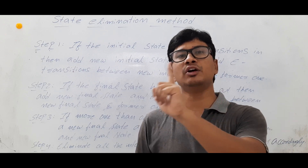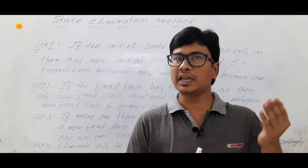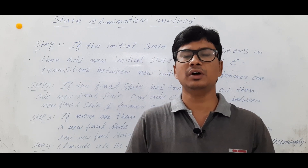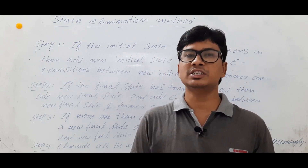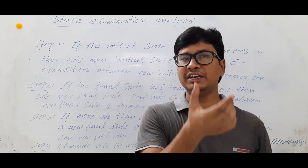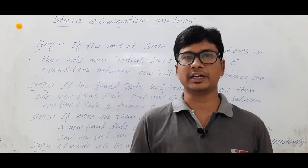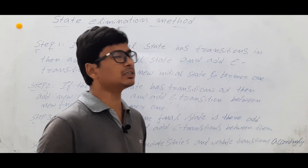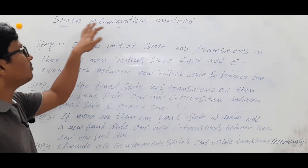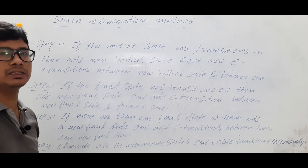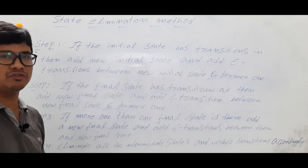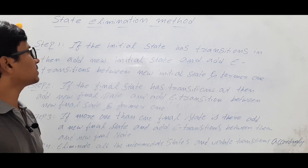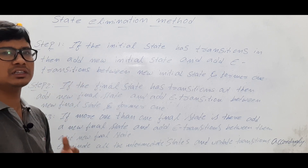We have already discussed regular expression to language conversion and language to regular expression conversion. Now we will do finite automata to regular expression, then regular expression to finite automata. In this video I want to discuss the steps in converting a finite automata to a regular expression. This method is called the state elimination method, which is one method for converting a finite automata to a regular expression.